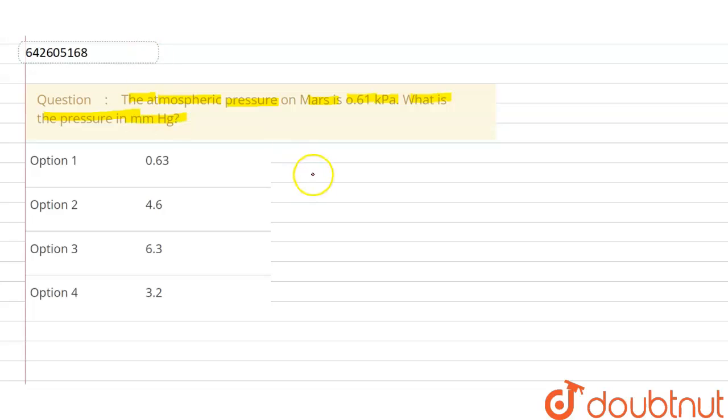So first of all, if you see, then 760 mm of Hg is basically equals to 1.01325, or approximately we can take 1.013 times 10 to the power 5 pascal.